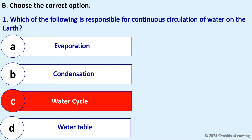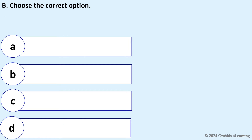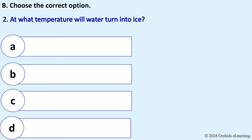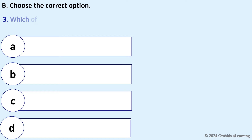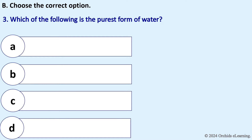Choose the correct option: Which of the following is responsible for the continuous circulation of water on the earth? Answer: The water cycle. At what temperature will water turn into ice? Answer: Zero degrees Celsius.